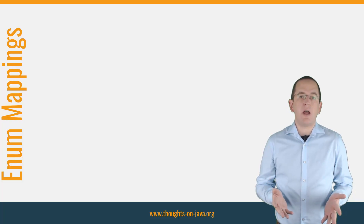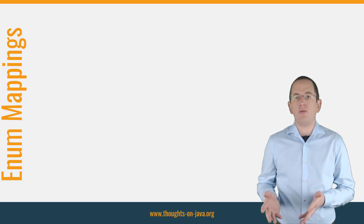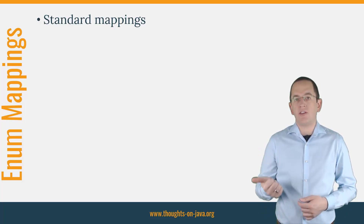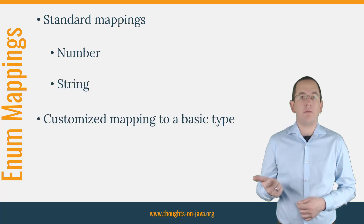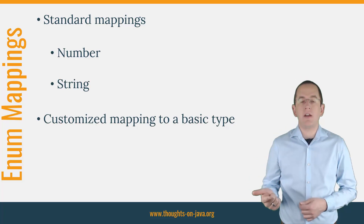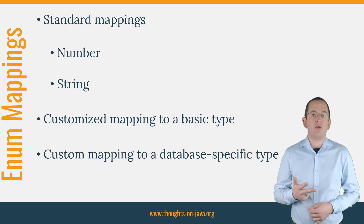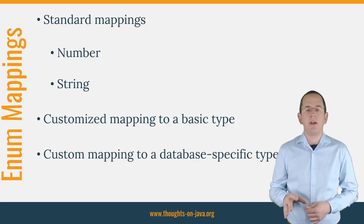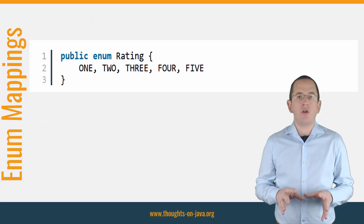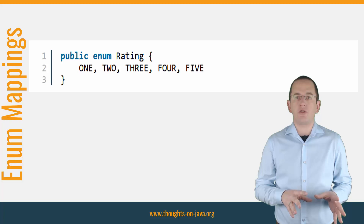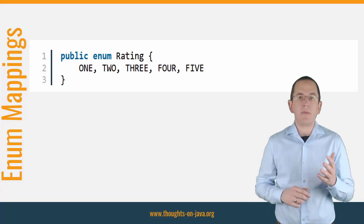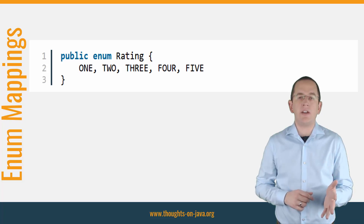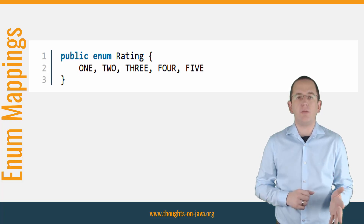With JPA and Hibernate, you can map enums in different ways. You can use the standard mappings to a number or a string, create a customized mapping to a basic type supported by Hibernate, or define a custom mapping to a database-specific type like PostgreSQL's enum type. In this video, I will show you how to use all three of these options to map the Rating enum you can see in this piece of code here.